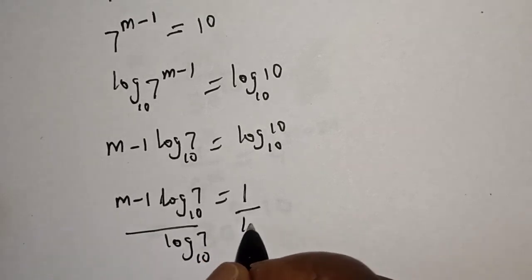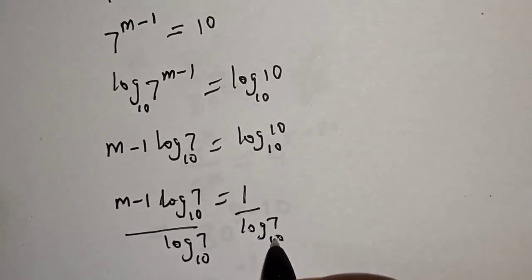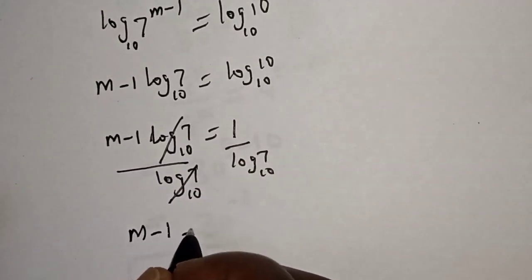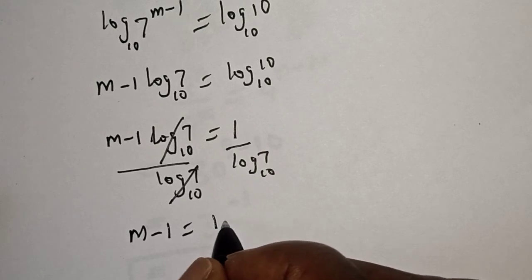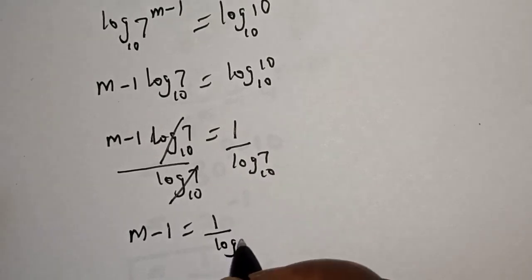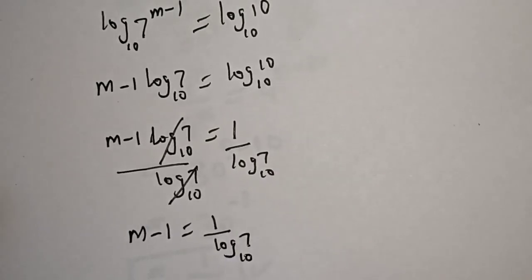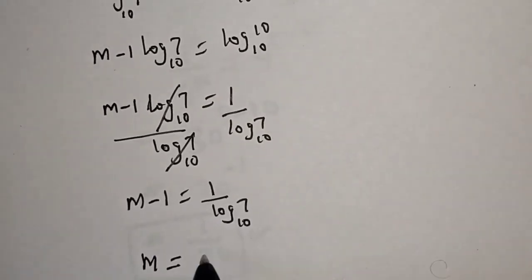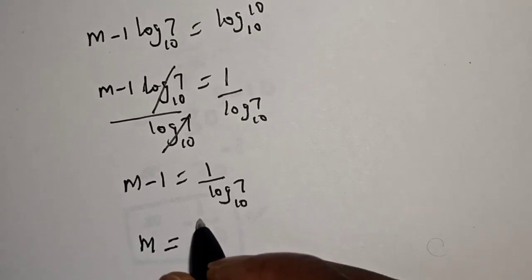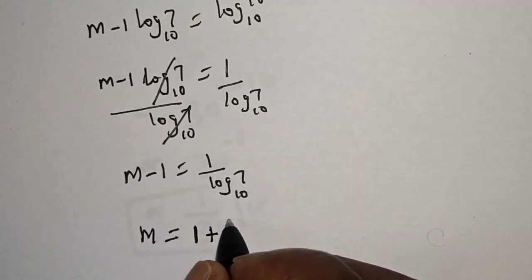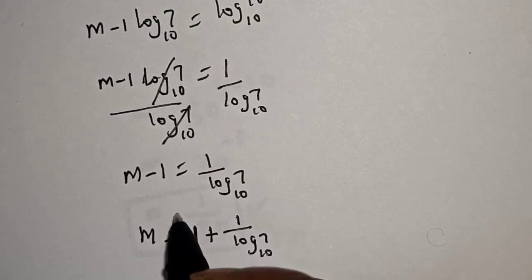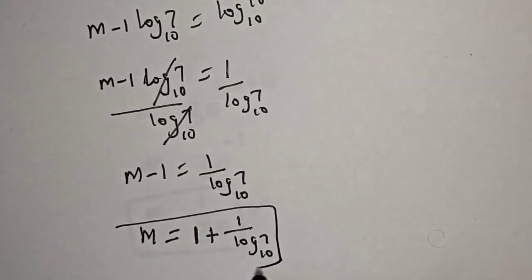This will cancel this. m minus 1 is equal to 1 over log 7 base 10. Then m equal to 1 plus 1 over log 7 base 10, and this is the final answer.